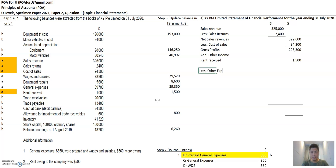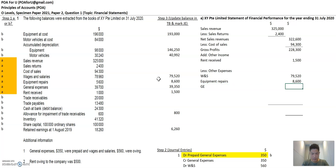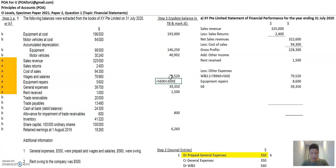Then you less other expenses. Look at all the A items and transfer all these expenses. Wages and salaries — I'm going to abbreviate this, but you shouldn't in your exams; write it in full — 79,520, that's the new balance. Equipment repairs, the new balance is 8,600. General expenses is 39,350. And you were supposed to also write in the workings for the new balance for each of these items, which is a requirement from your examiner.